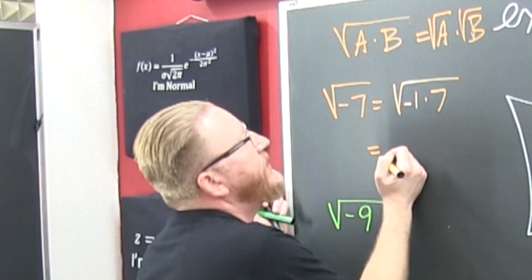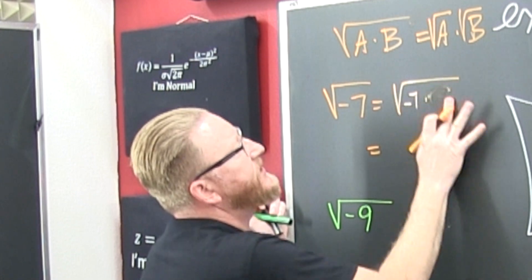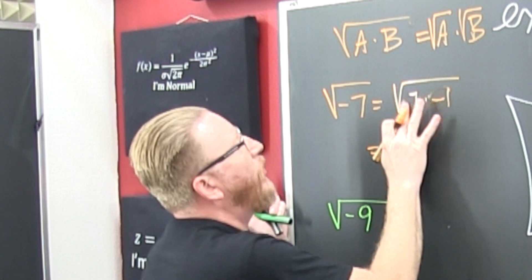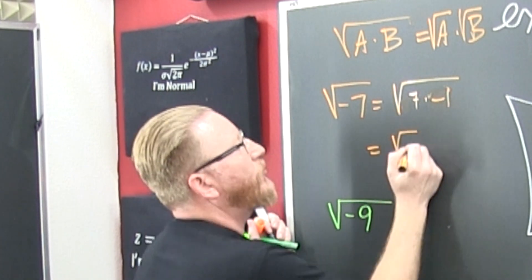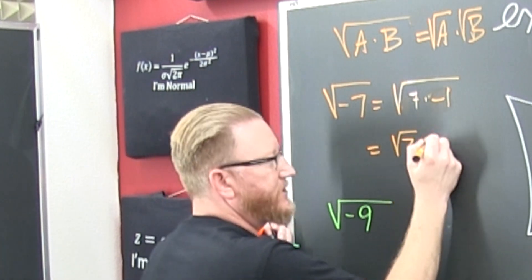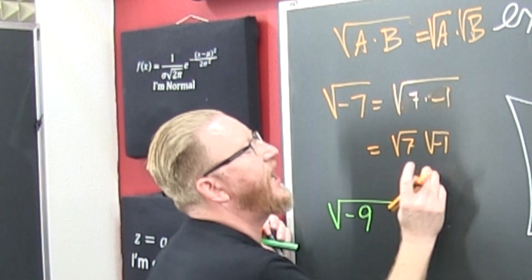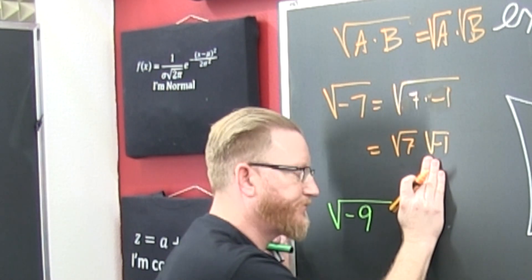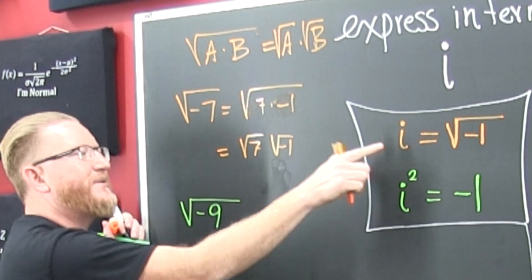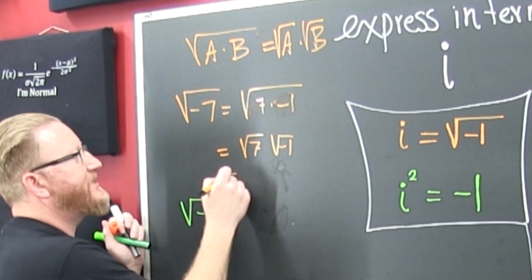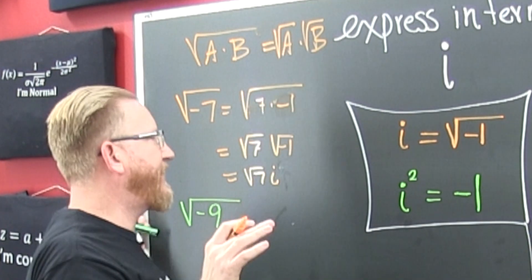So then what? I'm going to make that the 7 and this one the minus 1. That is the square root of 7 times the square root of minus 1. Because that was that thing right there. This is the square root of 7i.